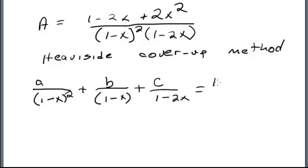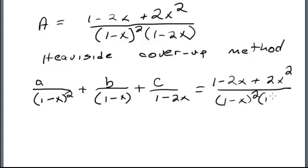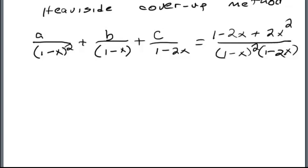First we solve for a by multiplying both sides by 1 minus x squared. That cancels, leaving b times 1 minus x plus c times 1 minus x squared, and the 1 minus x squared cancels on the right. Substituting x equals 1: we get 1 minus 2 plus 2 over 1 minus 2, which is 1 over negative 1, so a equals negative 1 by the Heaviside cover-up method.